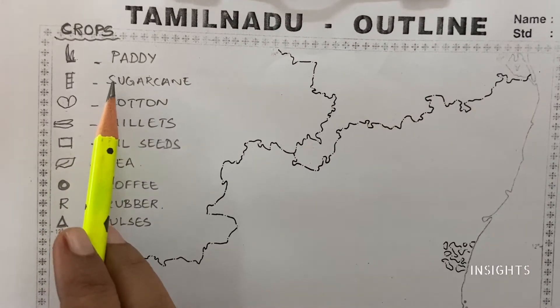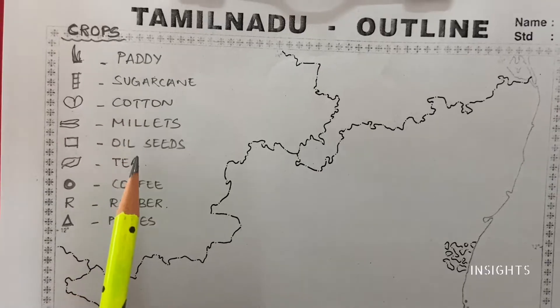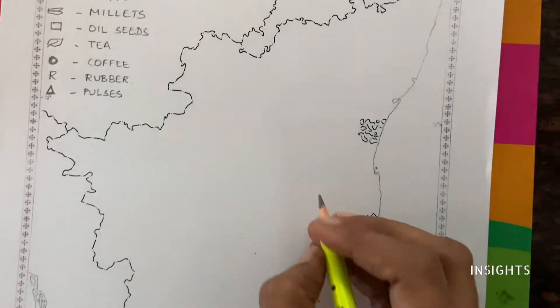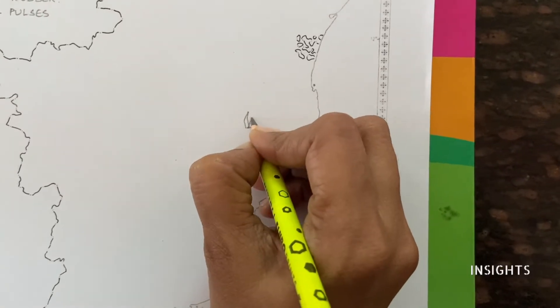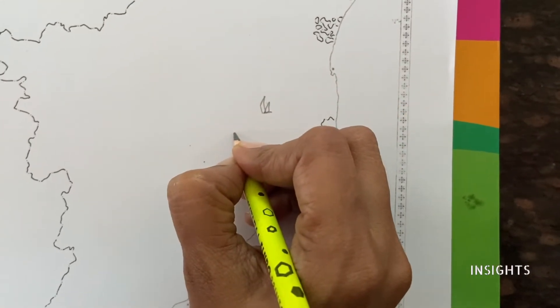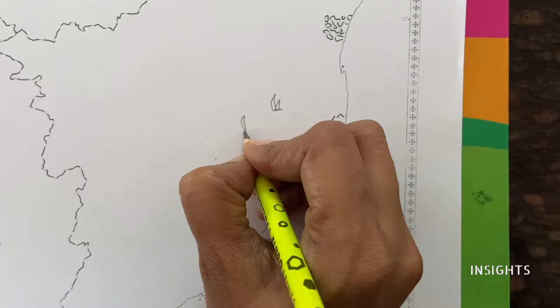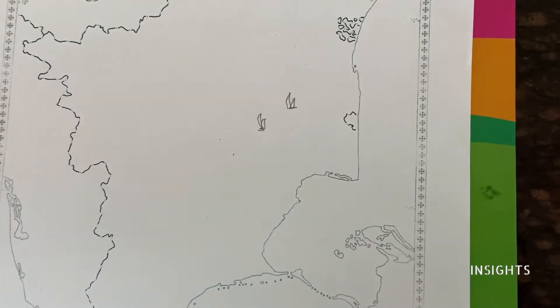Let's get started with paddy or rice. So the rice bowl of Tamil Nadu is Thanjavur. Let's get started by marking that. The symbol is in that place. Means they don't expect you to write the name of the place and all. So this is paddy growing area.